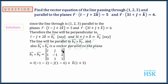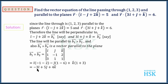To calculate the cross product, we write i, j, k in the first row, the coefficients of i, j, k for b1 in the second row, and the coefficients for b2 in the third row. Solving this gives i times (minus 1 minus 2), minus j times (1 minus 6), plus k times (1 plus 3), which equals minus 3i plus 5j plus 4k.